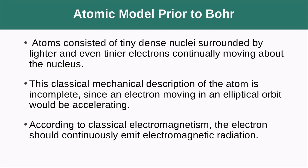This classical mechanical description of the atom is incomplete. Since an electron moving in an elliptical orbit, so like in some sort of circle, like the moon moving around the earth, it would be accelerating. And if it is accelerating and it does have a charge, well an accelerating charge is going to emit electromagnetic radiation. That is something that we know from physics.